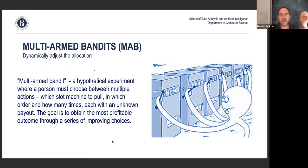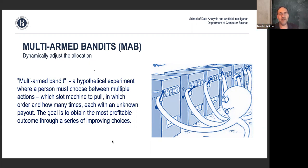Going and trying another machine is exploration; sticking with one machine that you believe gives the best result is exploitation. This is a concept that is very applicable to everyday life — you found something good, and you either stick with it or think there's something better around the corner and continue exploring. The question is: what algorithm maximizes your benefit? When do you stop exploring and start exploiting what you have?